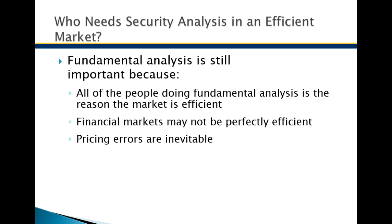Financial markets are not perfectly efficient because we have many factors that can create pricing errors and many conflicting points of view. For example, some analysts looking at Apple today might say competing products like Galaxy and Surface tablets are closing the innovation gap, so they'd price the stock lower than valuation models suggest — discounting further because of concerns about the company without Steve Jobs' leadership. Another analyst might say the company is doing fine and has plans to double in five years. Those conflicting views have a conflicting effect on stock price.